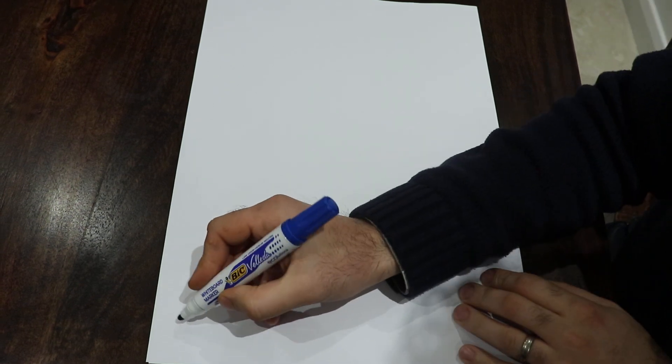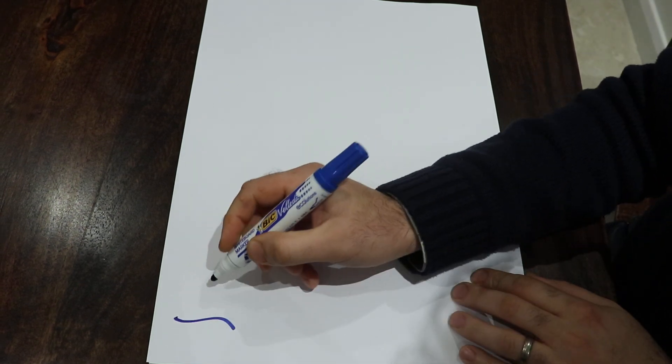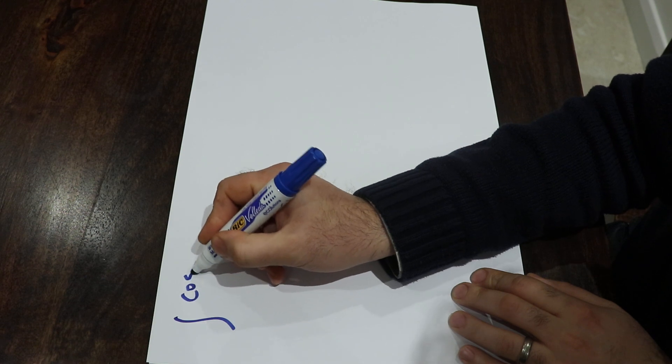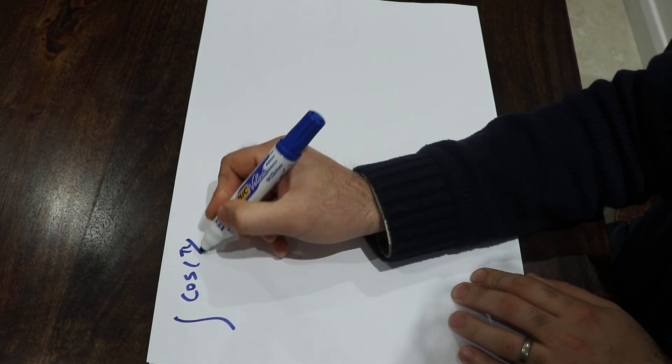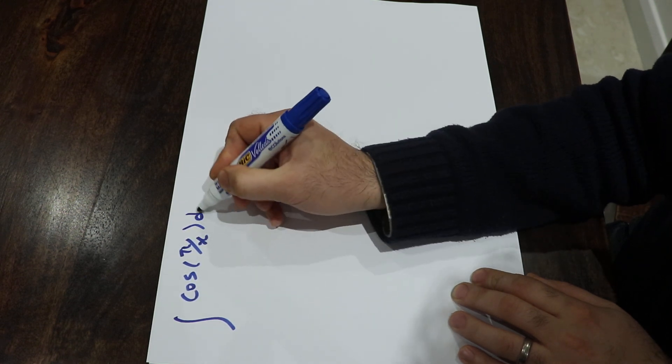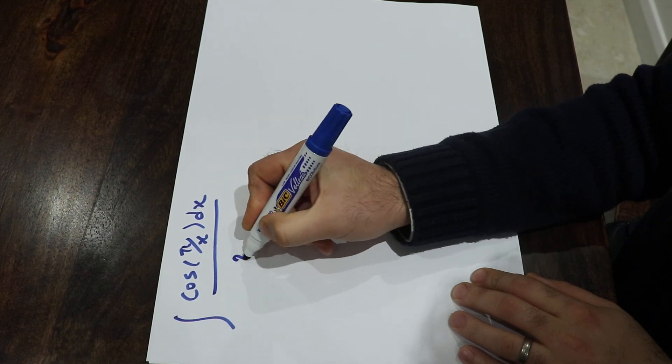Hello everybody, today I'm going to show you how to calculate the integral of cosine pi divided by x dx divided by x squared.